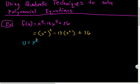But we're going to define U as being this X squared piece. And now I'm going to substitute U into the original equation. So I'll have U squared minus 13U plus 36.